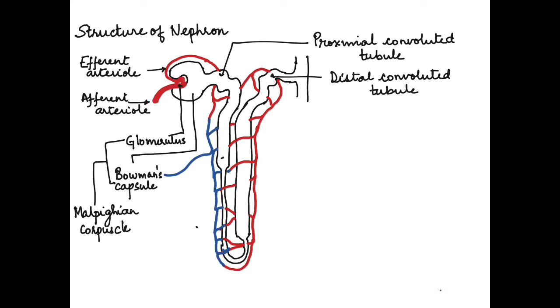The distal part of the tubule is called the distal convoluted tubule, which also helps in some reabsorption and mainly secretion.